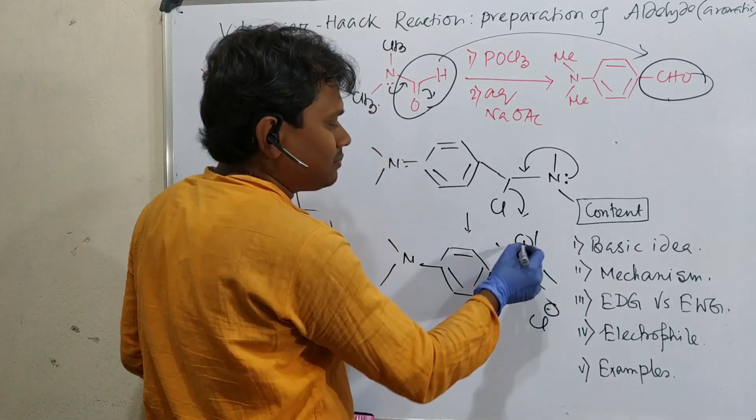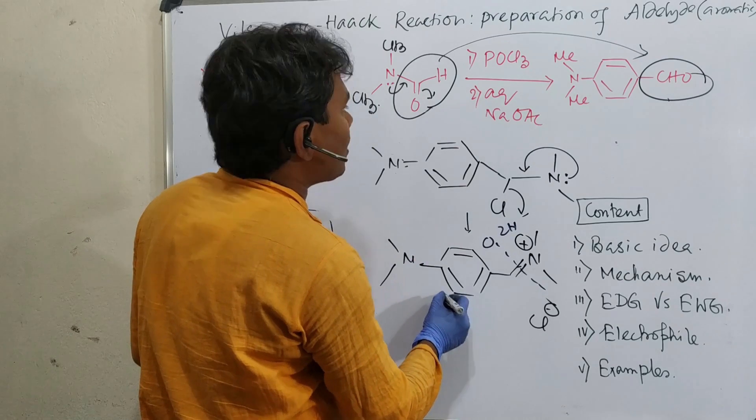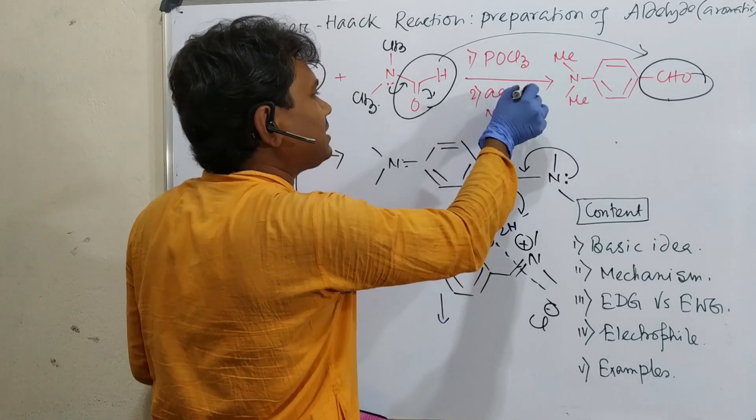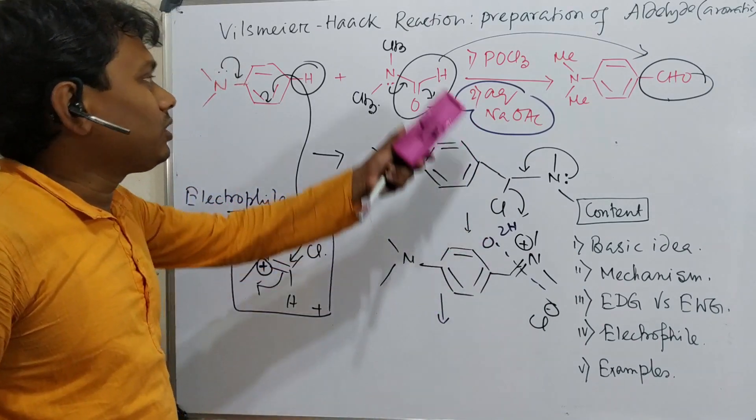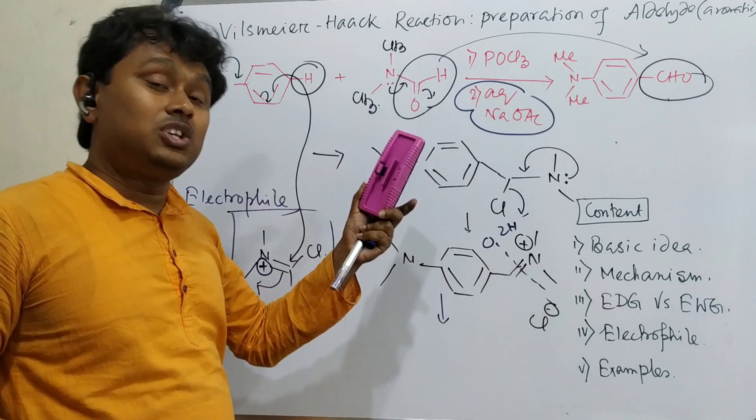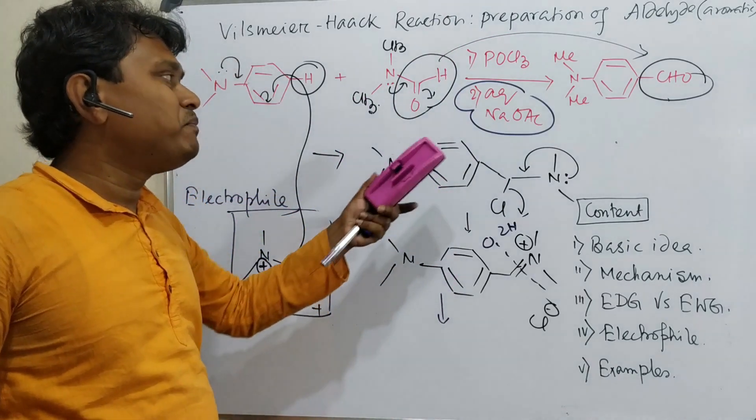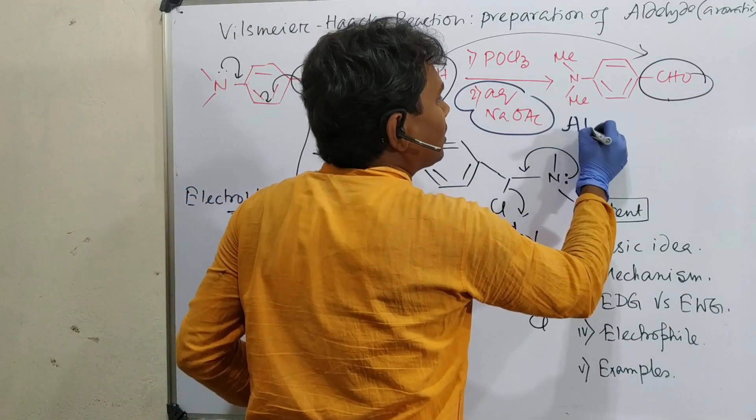This part will hydrolyze. Nitrogen will take two hydrogens and this part becomes oxygen through hydrolysis. That's why aqueous sodium acetate is used. Why? Because POCl3 is in the medium and everything is acidic, so you need basic conditions to quench it.